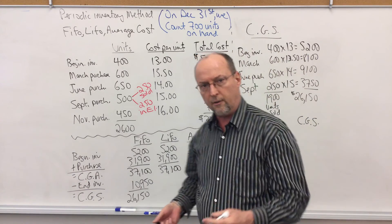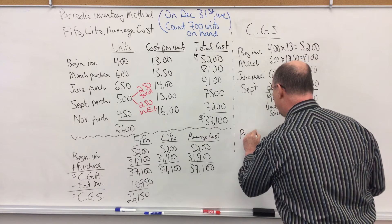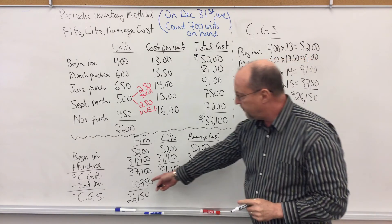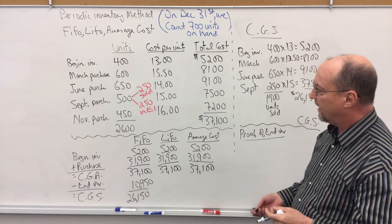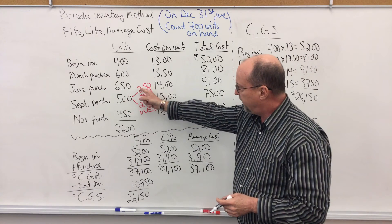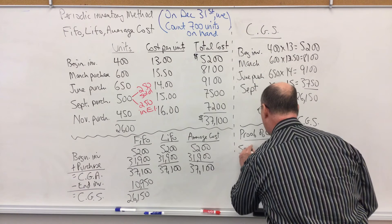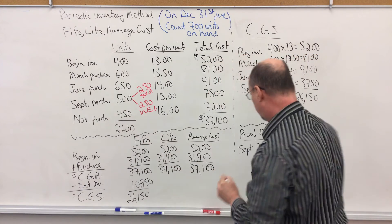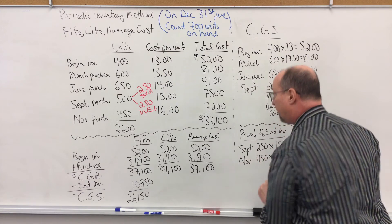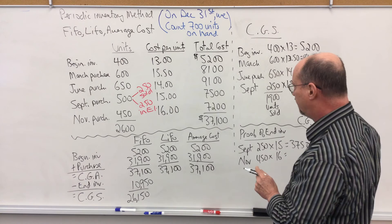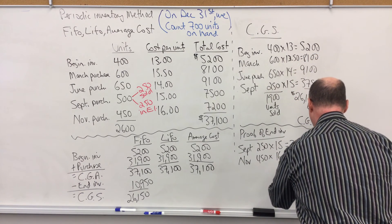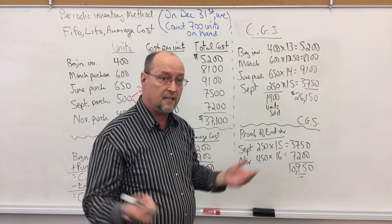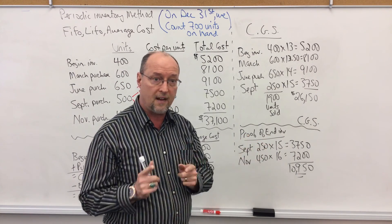We can also take what I call the long route — we call this the proof of ending inventory. We know that the dollar value is $10,950; let's go ahead and prove that it is in fact that. September: if 250 were sold, the other 250 were not sold. So in September, we have 250 at $15 each — that's $3,750. And then the November purchase: 450 units at $16 a piece is $7,200. And it looks like we have in fact proved ending inventory is $10,950. And that's how you calculate inventory and cost of goods sold using FIFO in the periodic system.